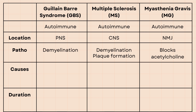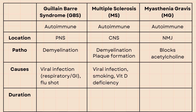The most common causes for GBS are respiratory and GI viral infections, as well as flu shots, although it is rare. Viral infection can also precede multiple sclerosis, but other factors such as smoking and vitamin D deficiency have been linked to causing multiple sclerosis. For myasthenia gravis, various precipitating factors such as infections, surgeries, and some medications can lead to myasthenia gravis, and about 10% of patients with myasthenia gravis have a thymoma, or tumor in the thymus.